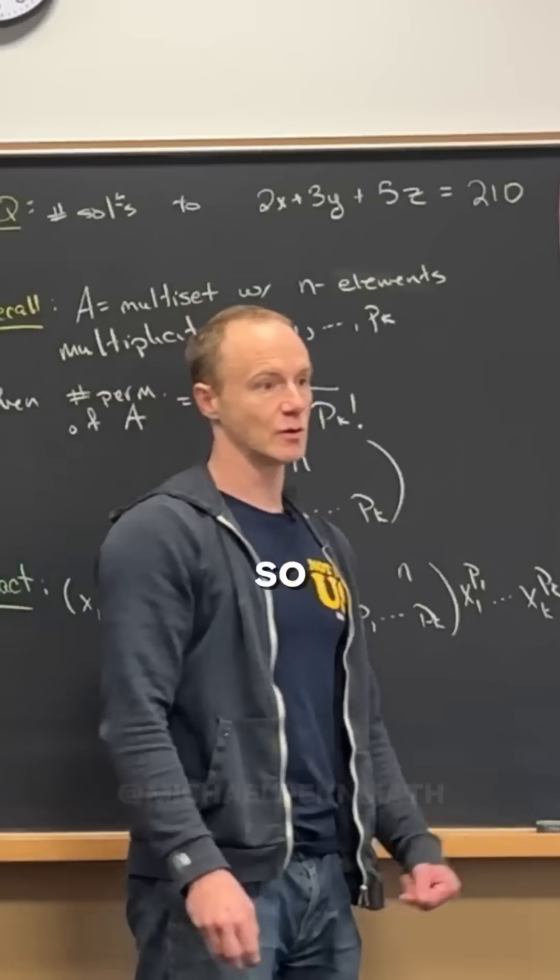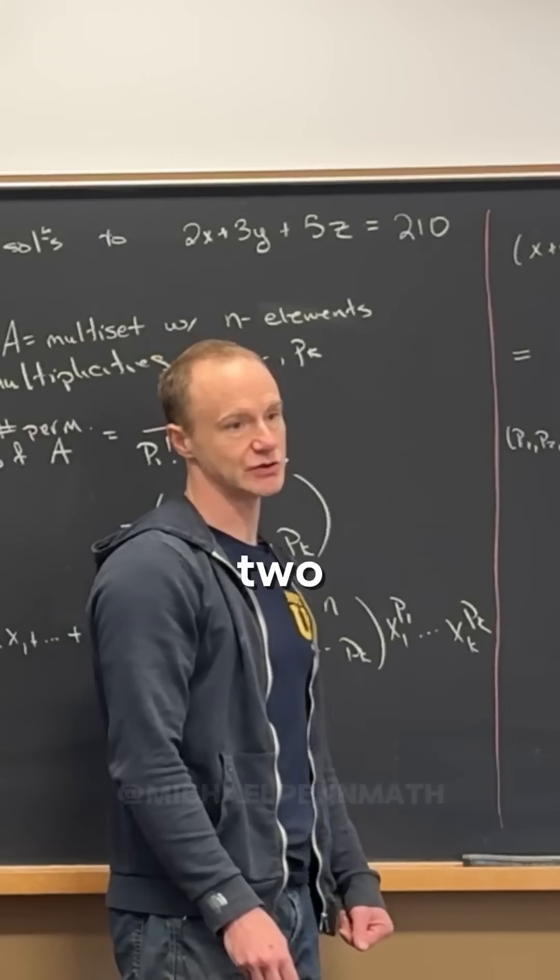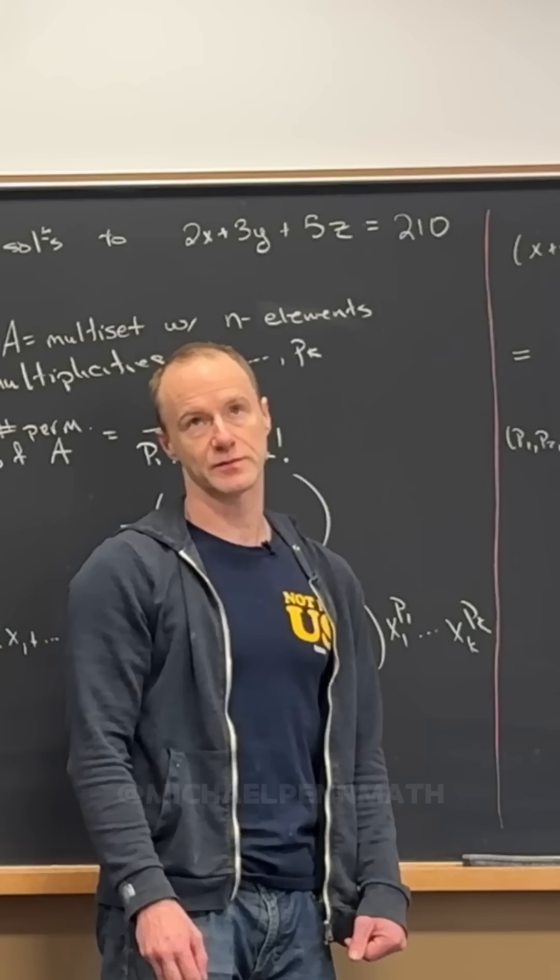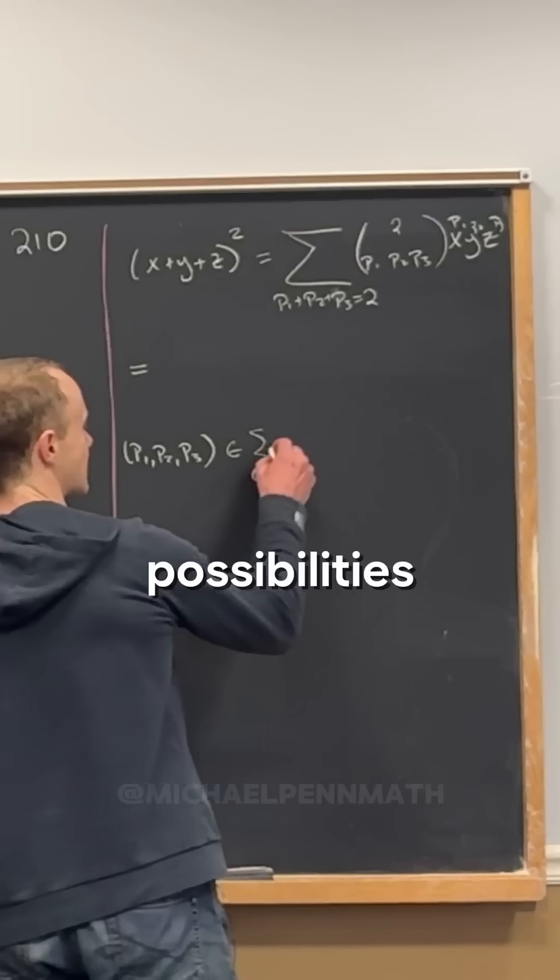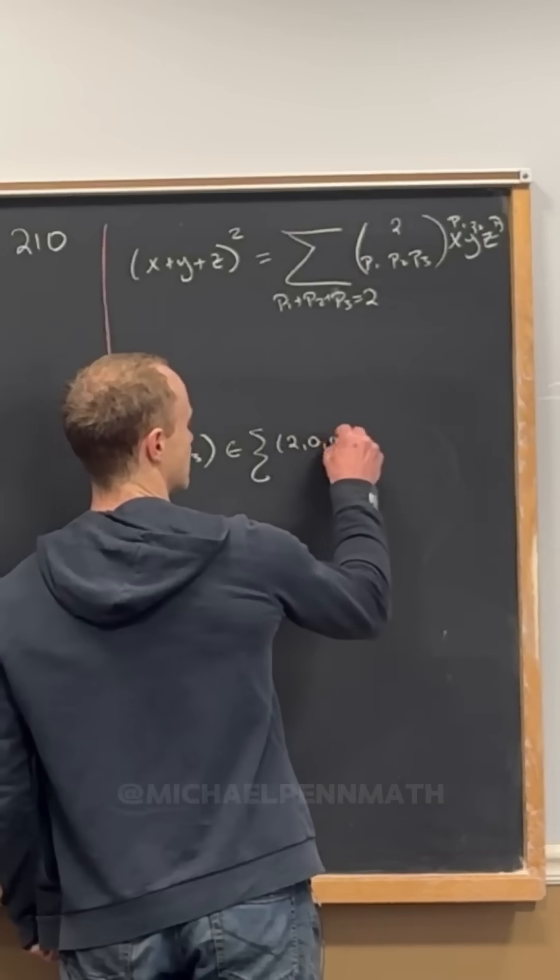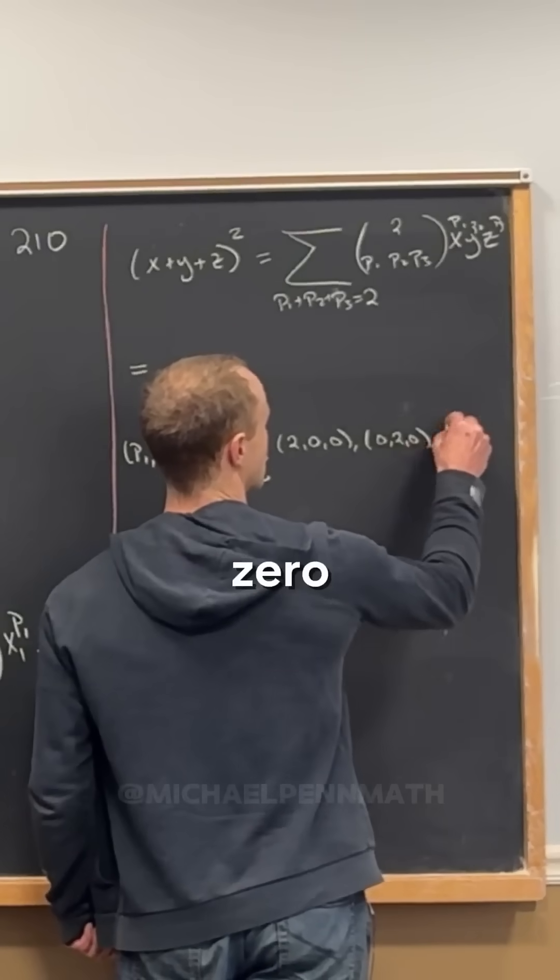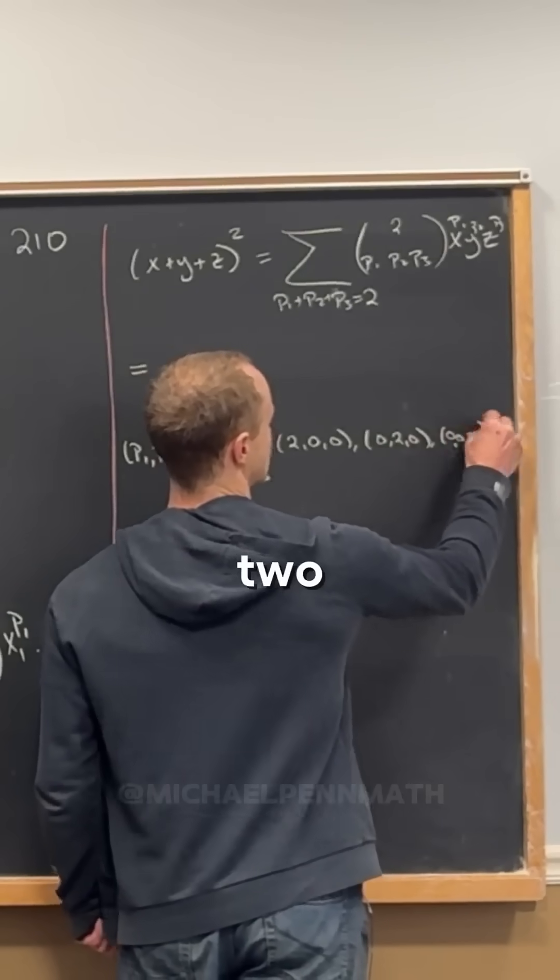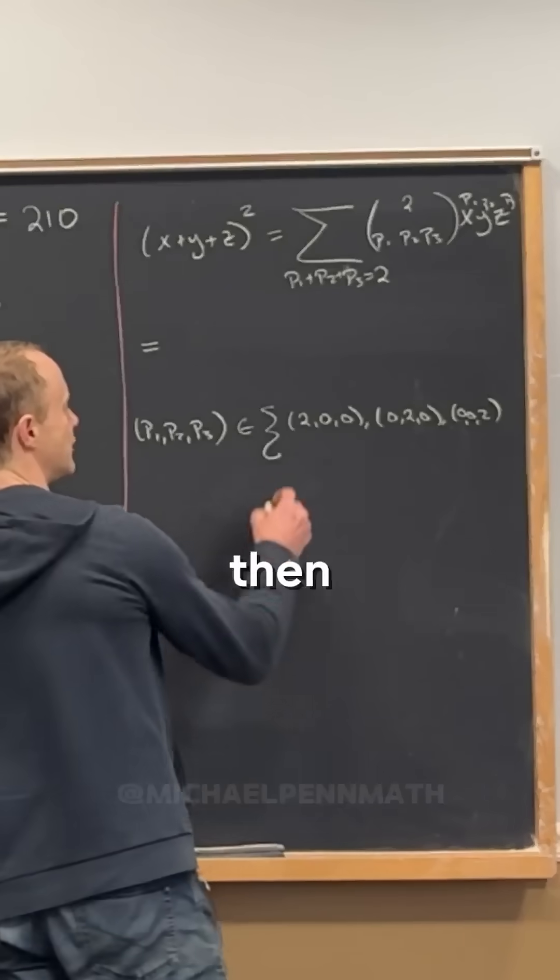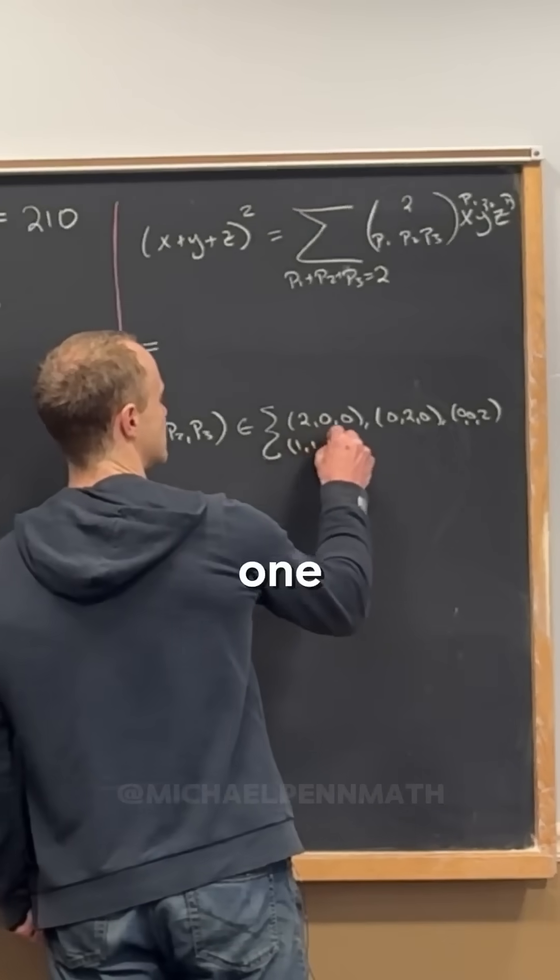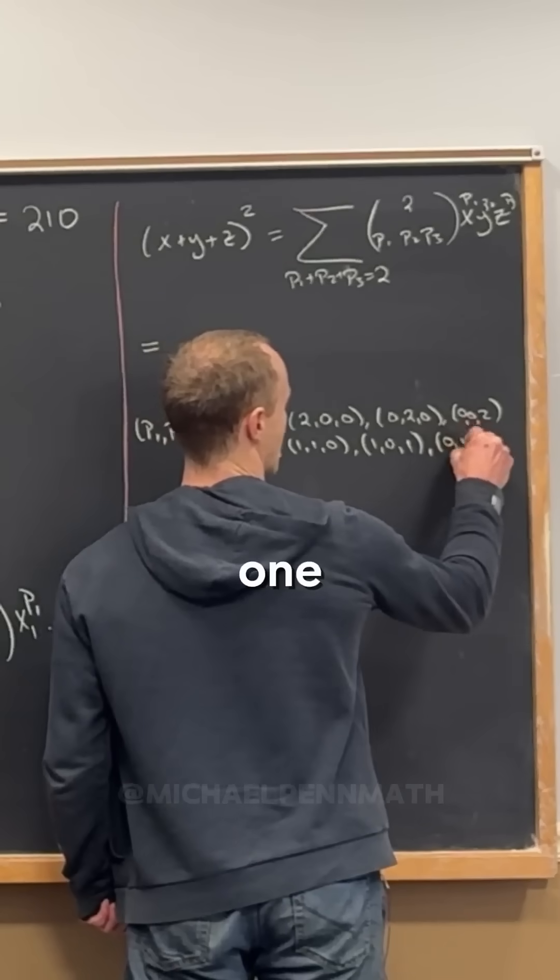So what are the rules? Well, the p1, p2, and p3 are between 0 and 2, right? And not only are they between 0 and 2, but they also have to add up to 2. So your possibilities are (2,0,0), (0,2,0), (0,0,2). That would be like one type of possibility, right? And then you could have a possibility (1,1,0), (1,0,1), (0,1,1), right?